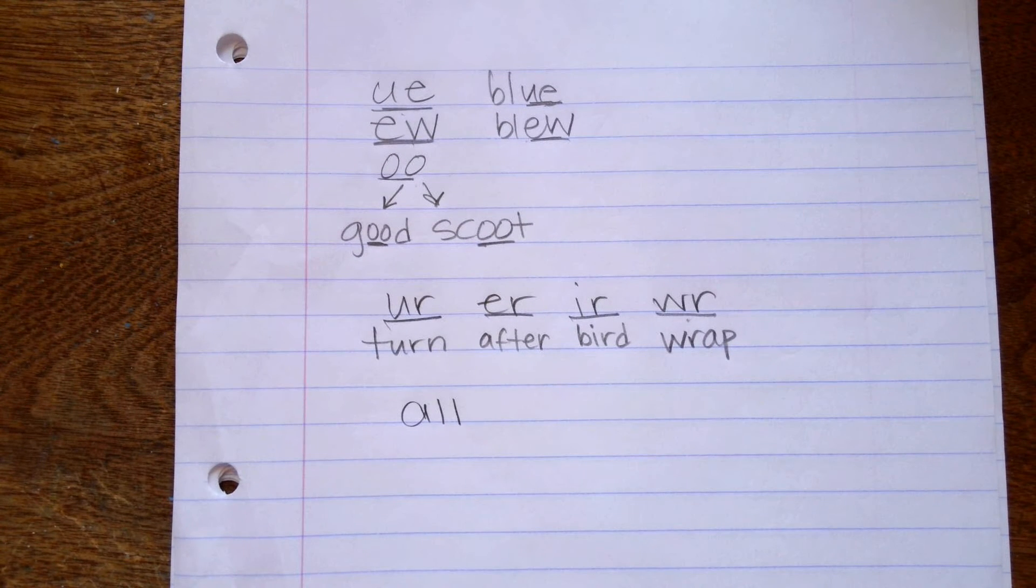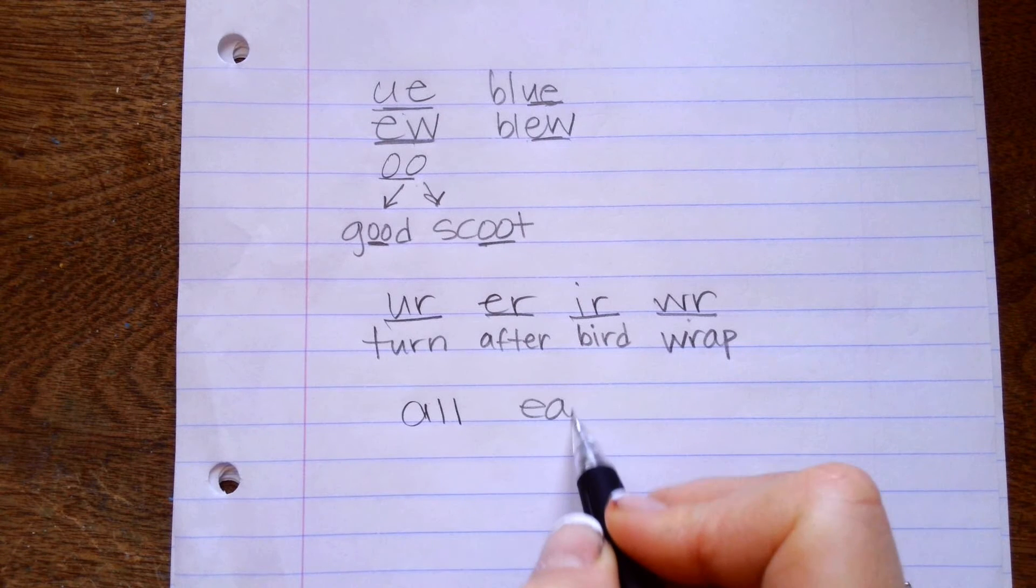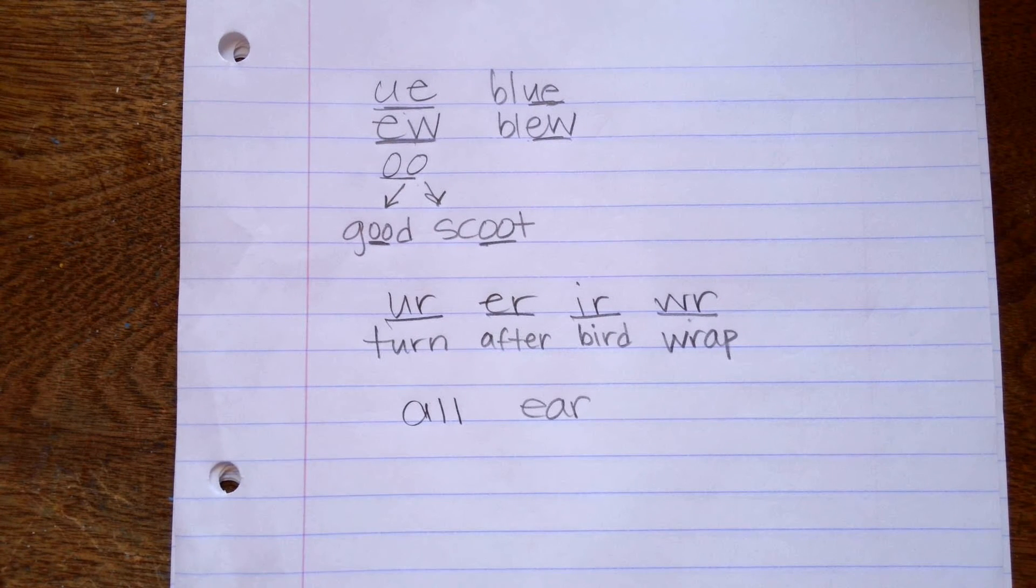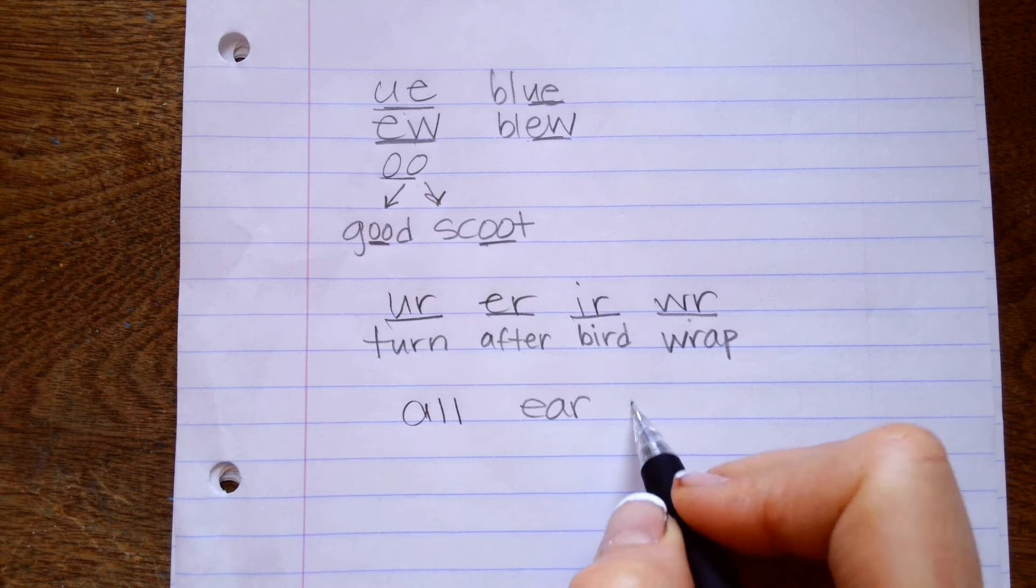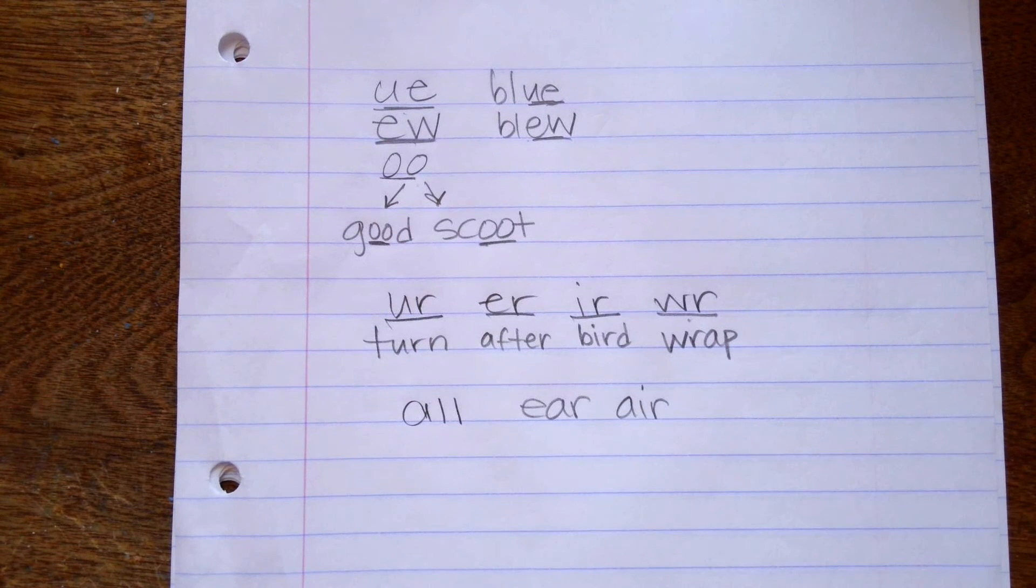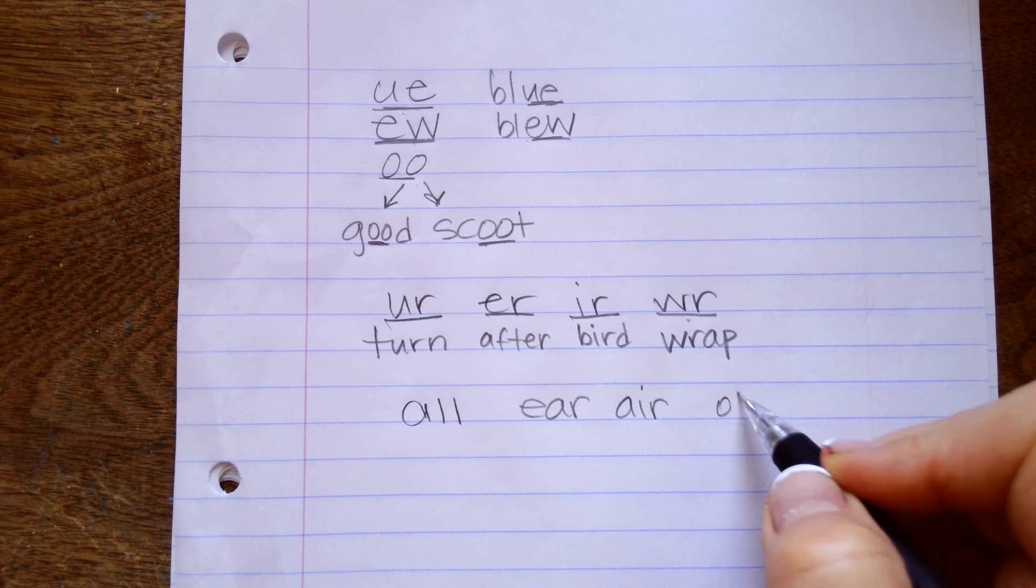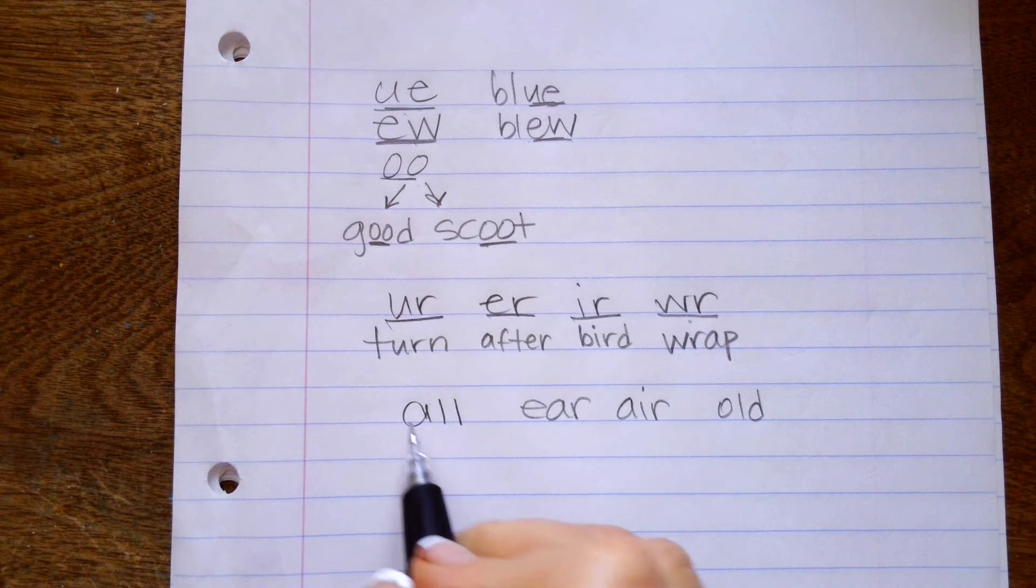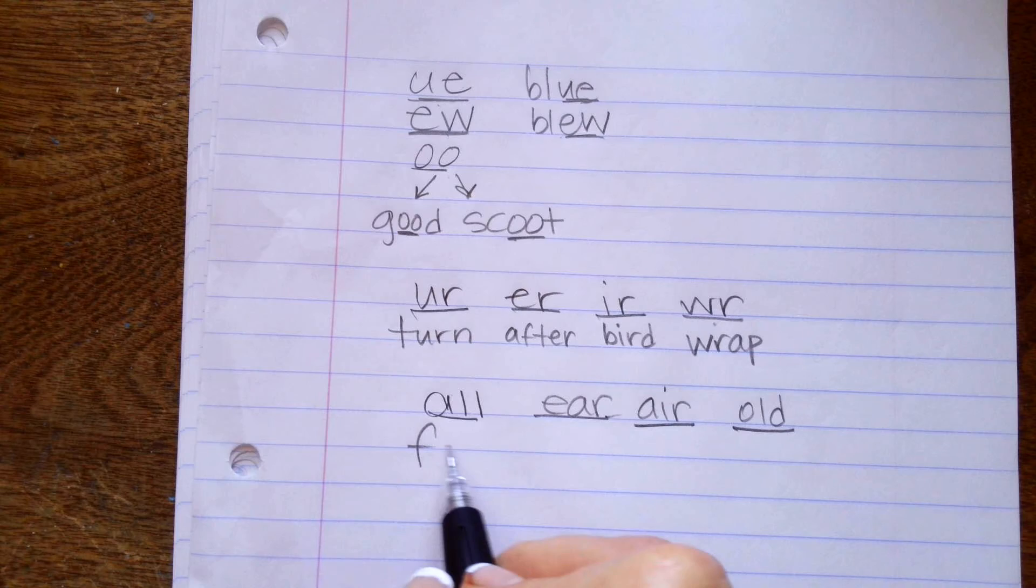So here we go. A-L-L is a word and it's a blend. It makes all. E-A-R is a word and a blend. It makes ear, like your ear that you hear from. A-I-R makes air, like you breathe in air. And then we have O-L-D makes old.